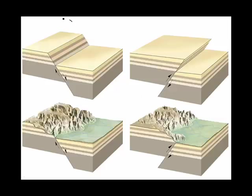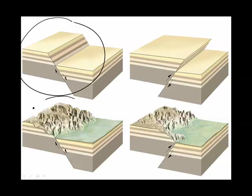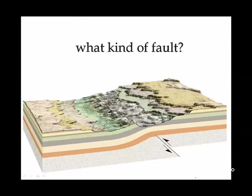Of course, the world doesn't look like those lovely little diagrams. Erosion will tend to attack the up-thrust side of the fault, leaving mountains with layers on the down-drop side not eroded. You can see that all over California — very distinct edges of mountain ranges. For example, the San Gabriel Mountains have a fault at their very edge.